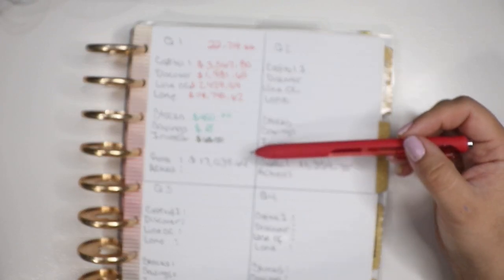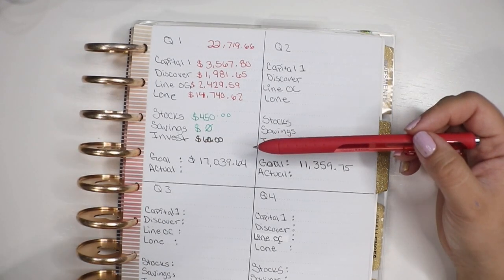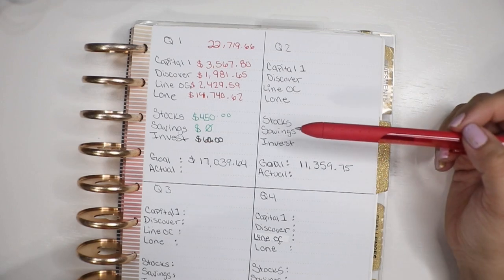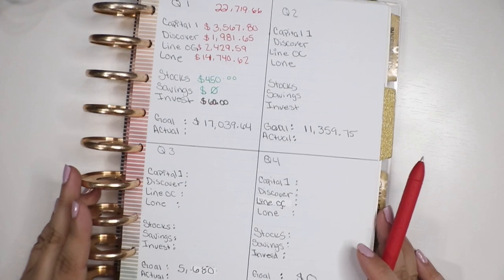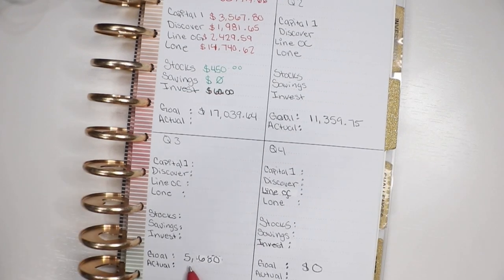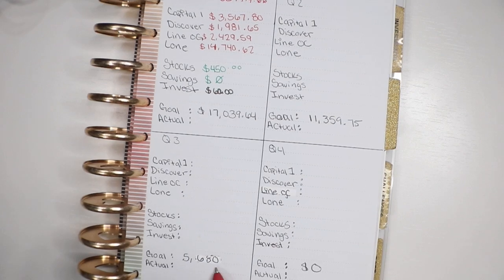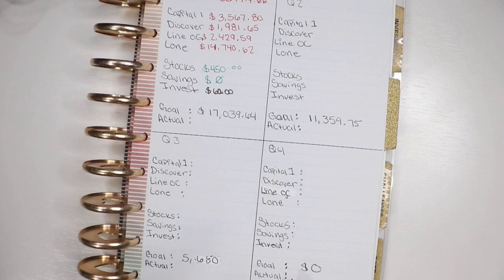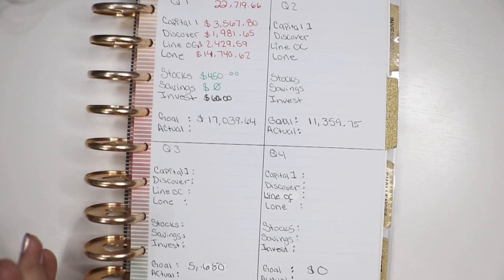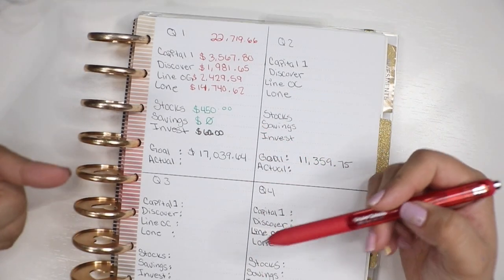Hopefully the second quarter is way better. By the end of the third quarter, I should be at around $5,680, and then by the end of December, if all goes well, I should be at zero.